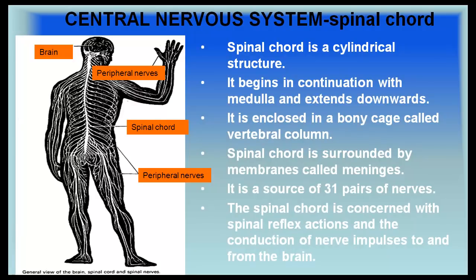The spinal cord is also part of the central nervous system. It is a cylindrical structure that begins in continuation with the medulla and extends downwards. It is enclosed in a bony cage called the vertebral column and is surrounded by membranes called meninges. It is the source of 31 pairs of nerves and is concerned with spinal reflex actions and the conduction of nerve impulses to and from the brain.